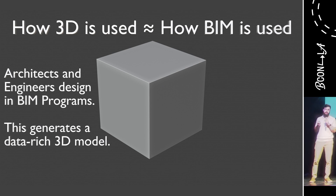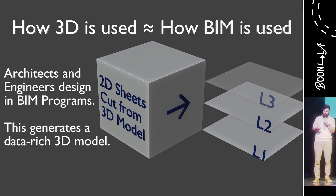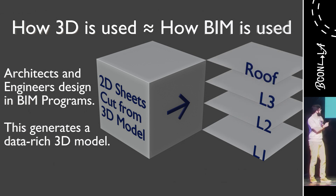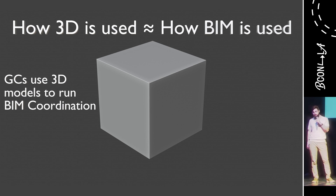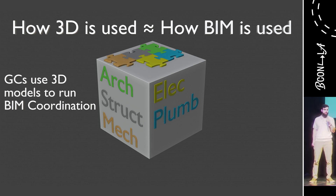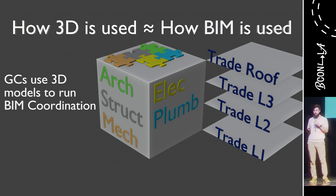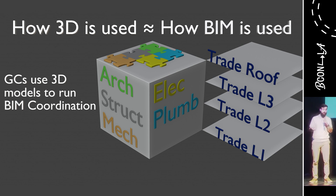The answer to how 3D in construction is generally used is actually pretty similar to the answer of how BIM is used in construction. Architects and engineers are designing in BIM programs and this generates a rich 3D model. They then take sections of this model to generate 2D sheets at different levels of the project. General contractors use this 3D model and run something called BIM coordination — essentially like solving a giant 3D puzzle with the pieces being architectural, structural, mechanical, electrical, and plumbing models. You'll often hear those last three referred to as MEP. At the end of this process, trade experts — also called subcontractors — get 2D installation drawings that should be clash-free and constructible, meaning able to be constructed.